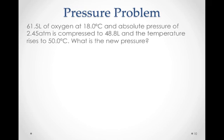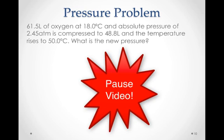Well, we have a couple more here, so sticking with it. 61.5 liters of oxygen at 18 degrees Celsius, and an absolute pressure of 2.45 atmospheres is compressed to a new volume of 48.8, and the temperature rises to 50 degrees Celsius. And then we're going to try to find the pressure. So, good luck, and then pause the video, come on back when you've given this a shot. A little hint to use that proportional form of the ideal gas law.